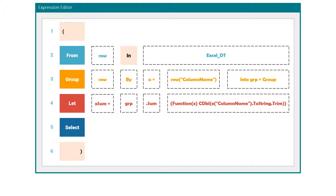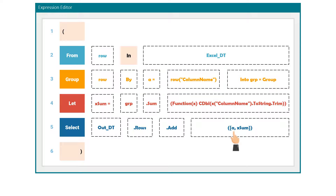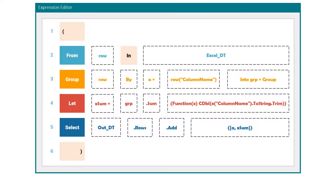The last statement is 'select'. Using this statement we define what we want to get as output. In this example we want to save the data into a new data table. We write the name of the table first, then the functions rows and add — using these functions we add new rows into this table. Then we define the content of the table: we have two columns, so we need two variables. The first one is variable 'a', which gives us the category — food and drinking. The second one is variable xsum, which contains the sum of all prices per category. At the end, after the brackets, we set the function copy to data table, which converts the output type into a data table. The query is now ready.